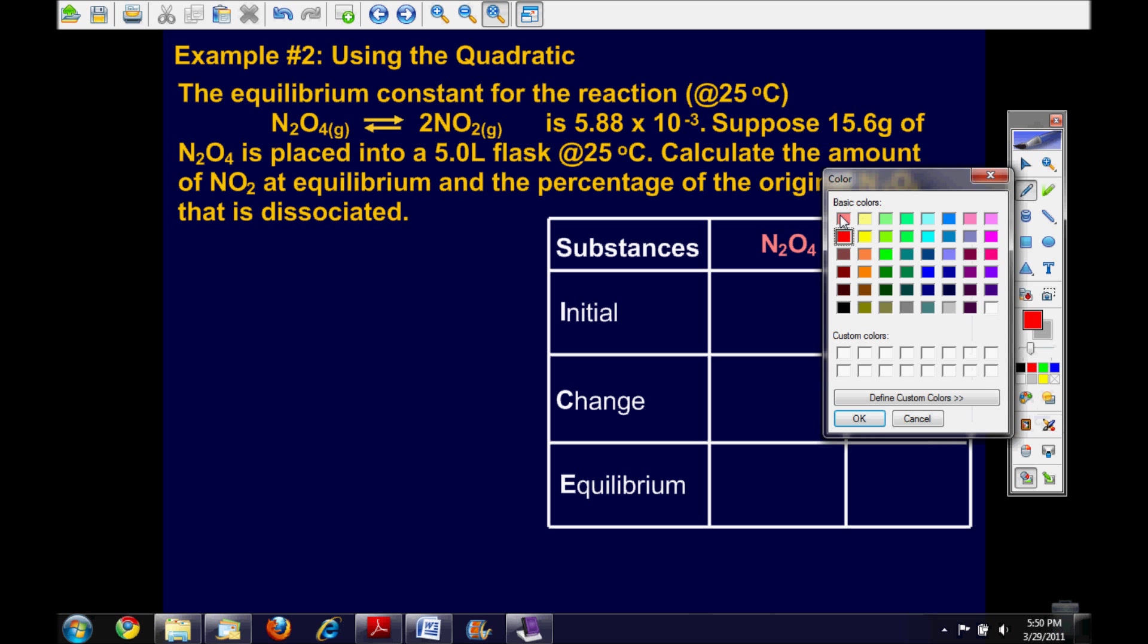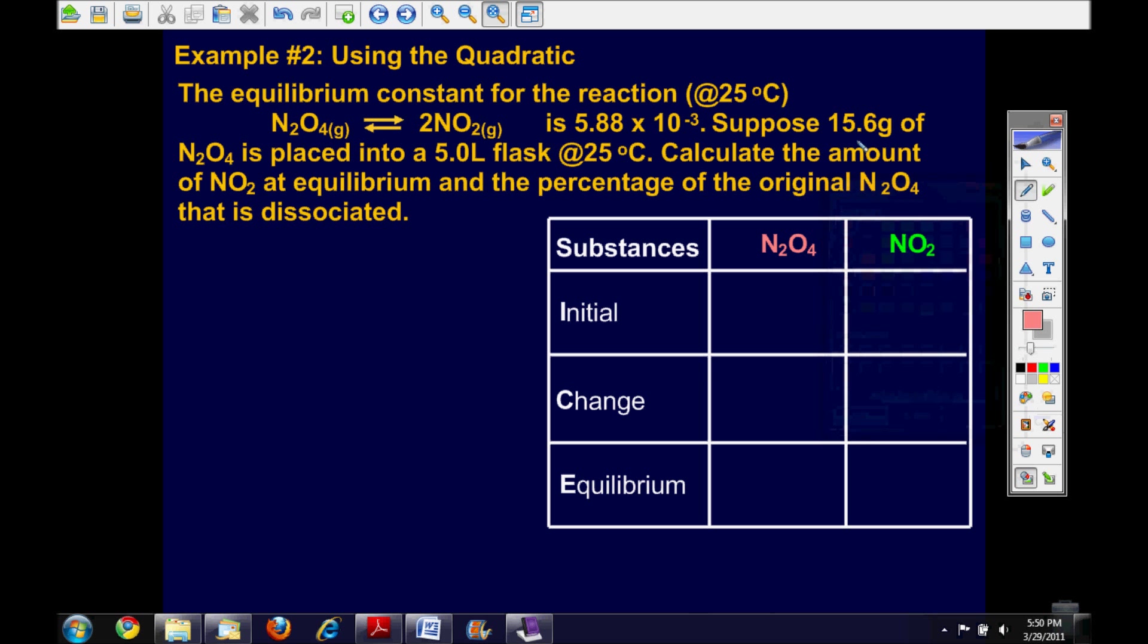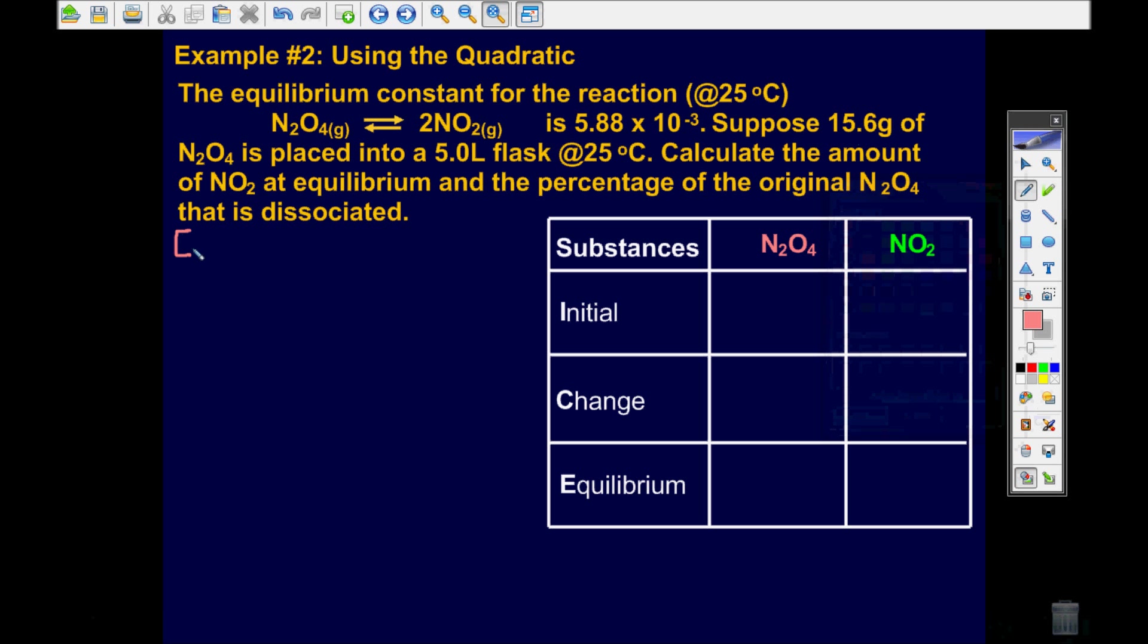In order to do that, I'm going to have to convert this gram amount into moles. So that's where I'm going to begin. The concentration of N2O4 must be calculated. So I'm going to get the molar quantity first, 15.6 grams of N2O4, and I'm going to multiply that by one mole over its molar mass, which is about 92 grams per mole.